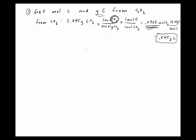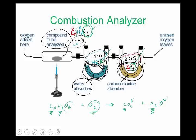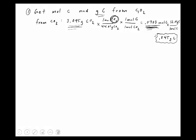Going back, we now know how many moles of carbon are in the product. All of that carbon — 0.0703 moles — came directly from the original unknown compound and nowhere else, so we can relate it back to the original sample.